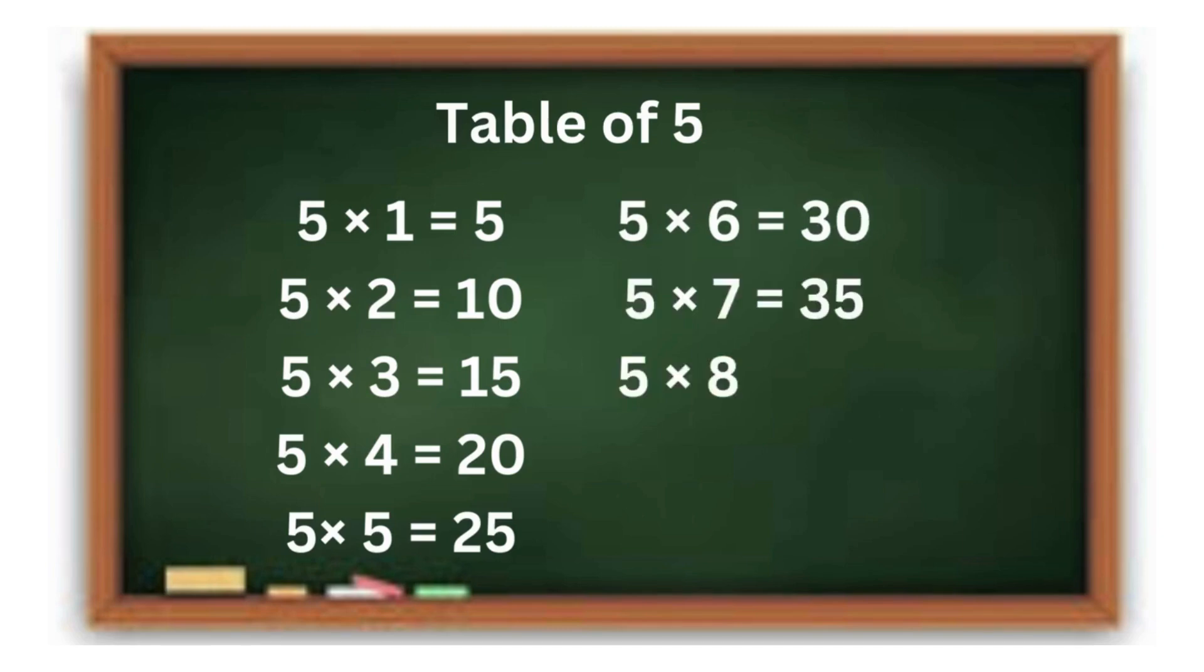5 times 7 is 35. 5 times 8 is 40. 5 times 9 is 45. 5 times 10 is 50.